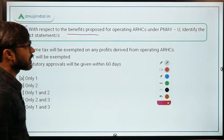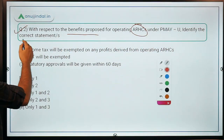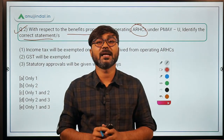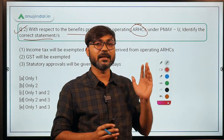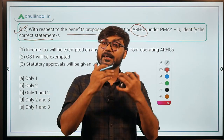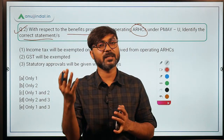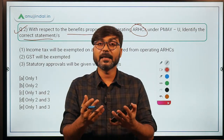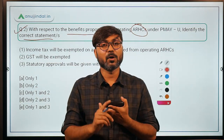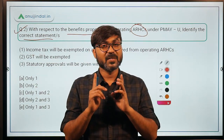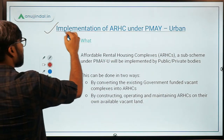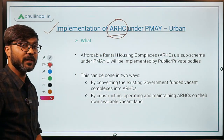With respect to the benefits proposed for operating ARSCs — Affordable Rental Housing Complexes — under Pradhan Mantri Awas Yojana Urban, we need to identify the correct statements. If you are a follower of the government scheme series, you should know about this. Basically, ARSCs are Affordable Rental Housing Complexes launched after the coronavirus pandemic for migrants. The implementation of ARSCs will be done in PPP mode — public-private partnership mode.